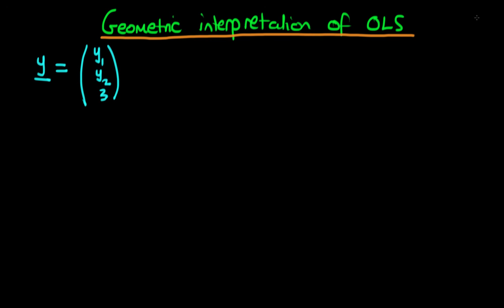Note that because we've written this as a vector — y1, y2, and y3 — we could think about drawing this as a vector in three-dimensional space. So if we imagine we have three-dimensional space, then we could represent this whole thing as a vector.